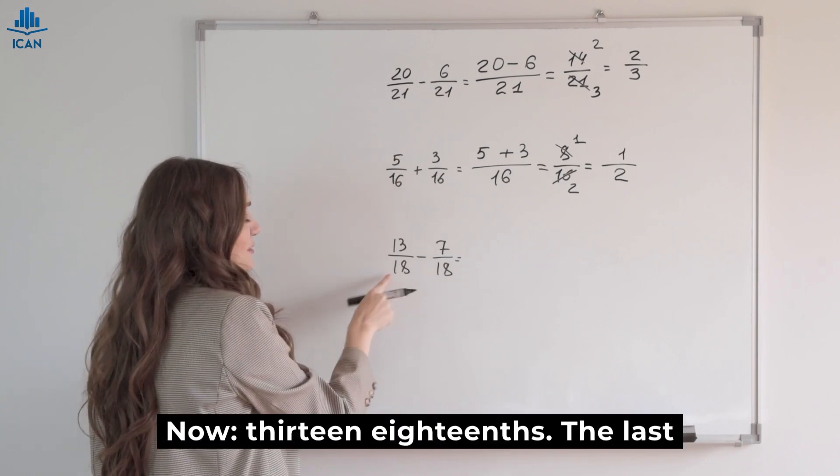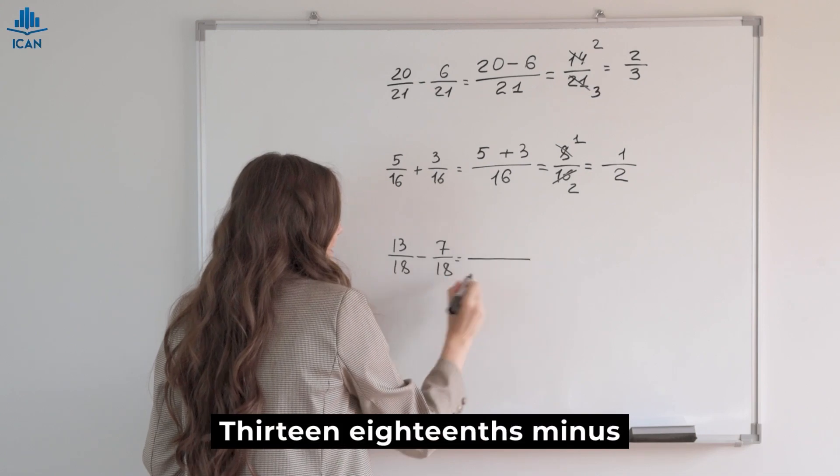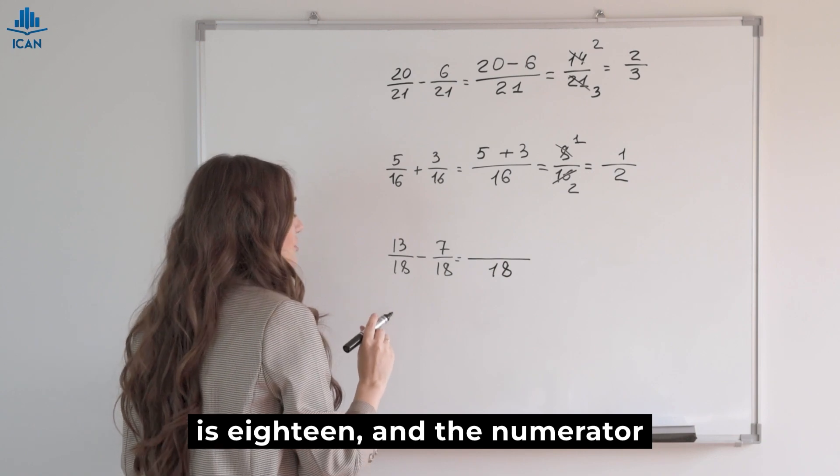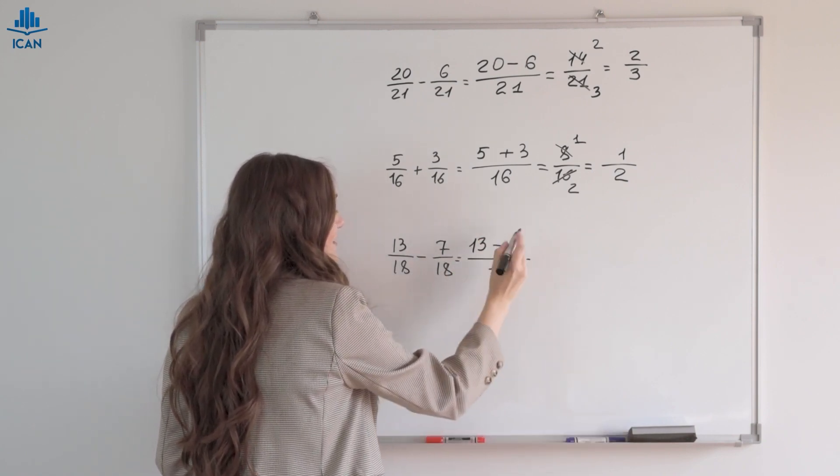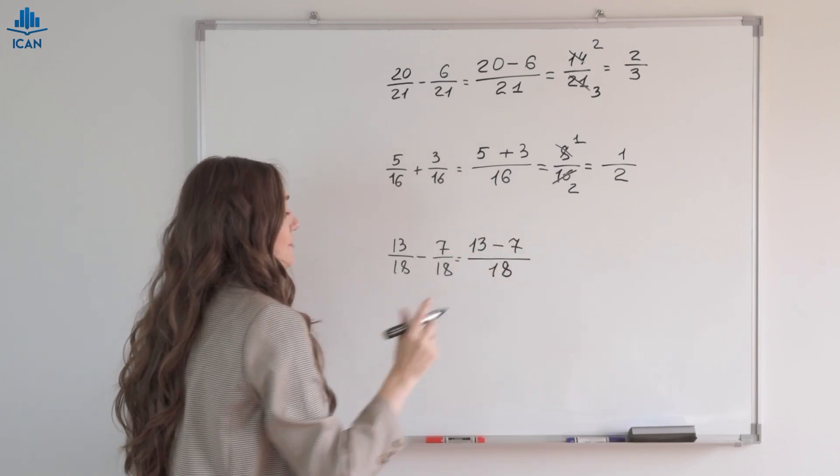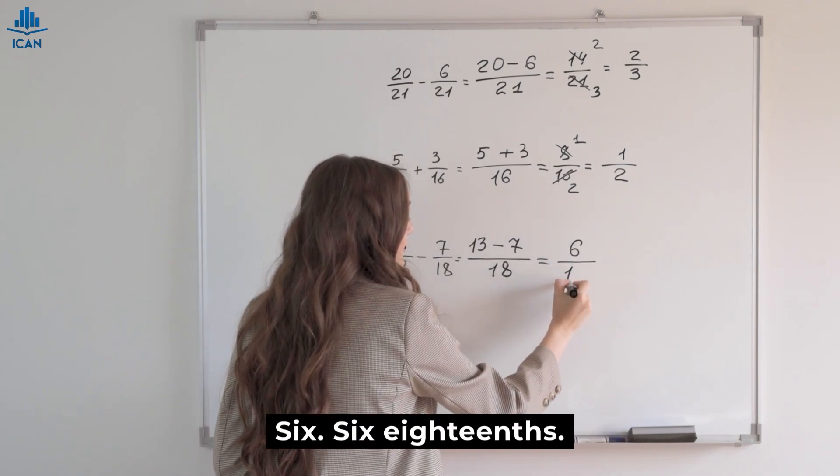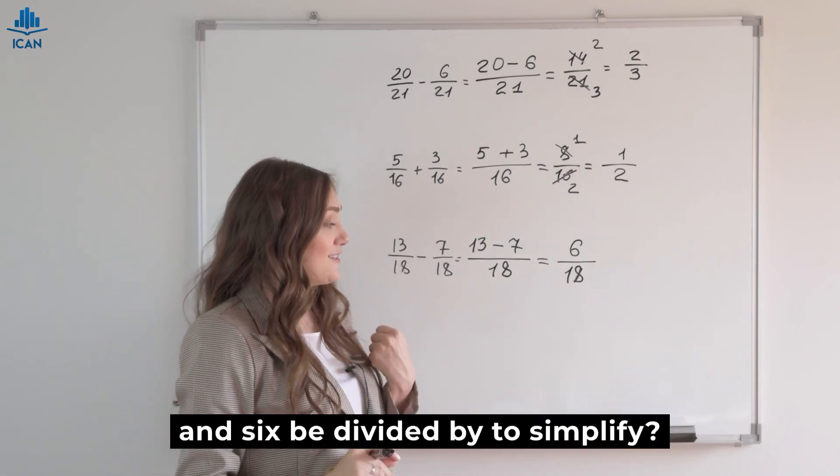Now 13/18, the last example, the final stretch. 13/18 minus 7/18. The denominator is 18 and the numerator is 13 minus 7. Yes minus, don't forget it's minus not plus. 13 minus 7, what does that equal? 6. 6/18.